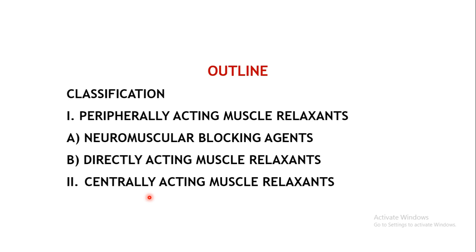Peripherally acting muscle relaxants have their mechanism of action in the periphery, that is outside the CNS, whereas centrally acting muscle relaxants act in the CNS. These peripherally acting muscle relaxants again act by two mechanisms and are accordingly of two types: neuromuscular blocking agents and the directly acting muscle relaxants. We are going to cover all of these in detail, including the individual drugs and the general pharmacology.